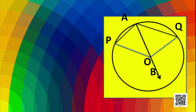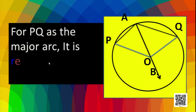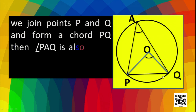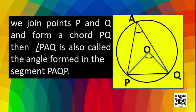For PQ as the major arc, what can we say? That it is the reflex angle of POQ, and its value is twice the angle PAQ. Now, if we join P and Q, we get a chord, and we have two segments — one is the major segment and another is the minor segment. We can say this angle PAQ is the angle subtended by PQ in the segment.